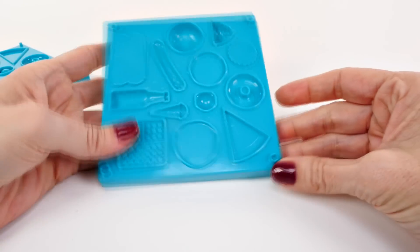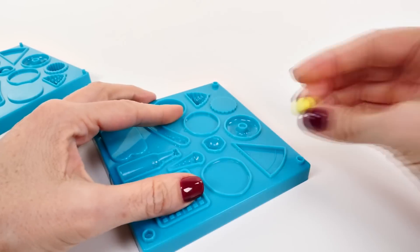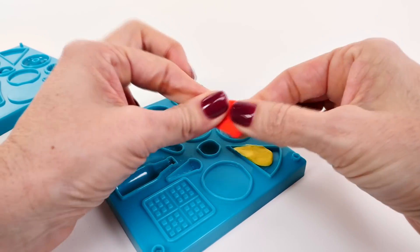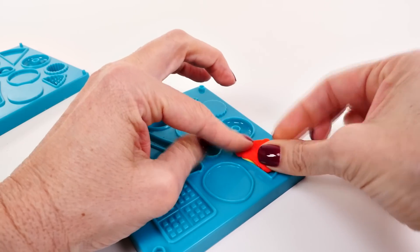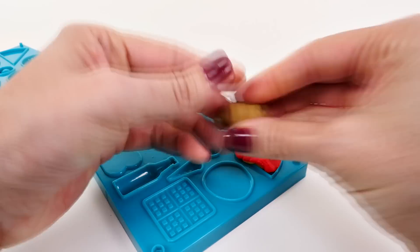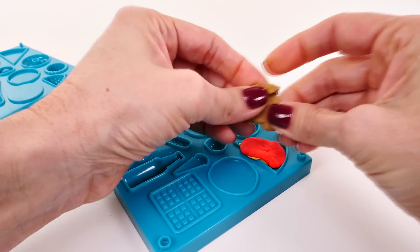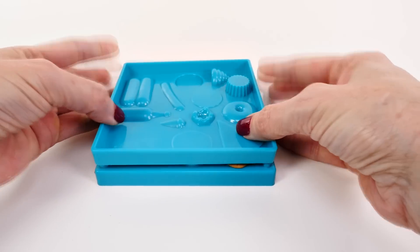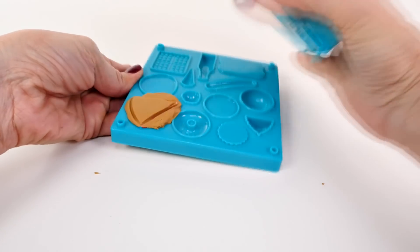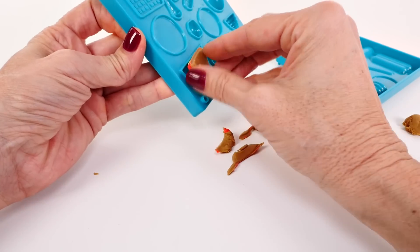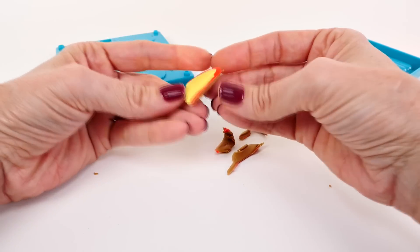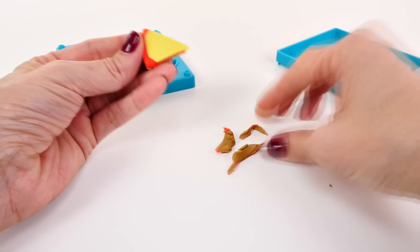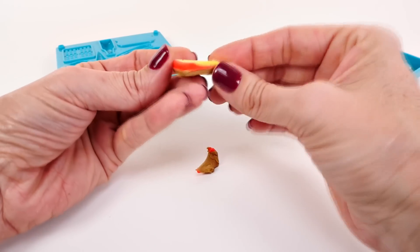Aww! Next let's try the slice of pizza. We'll press in our cheese, and then our sauce, and then our crust. Tada! Okay, so let's make some little pieces of pepperoni to go on top.